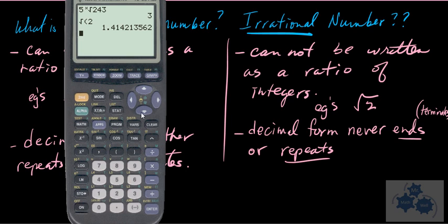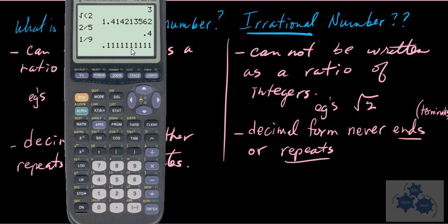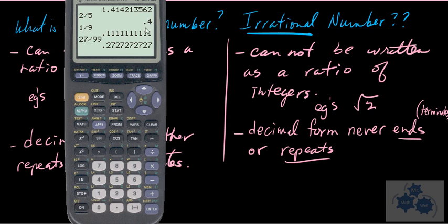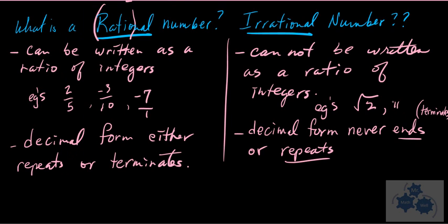For rational numbers, the decimal form either terminates or repeats. For example, 2 divided by 5 equals 0.4 — terminating. And 1 divided by 9 equals 0.1 repeating. Even 27 divided by 99 shows blocks of numbers repeating. All of those indicate a rational number. The most famous irrational number is pi — the calculator fills up with non-repeating decimals that never end.